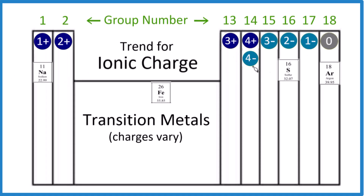So sodium, sulfur, and argon — pretty easy if you know the trend. Iron, we'd have to see what it was bonded to. For example, if it was bonded to sulfur, that would give us more information.